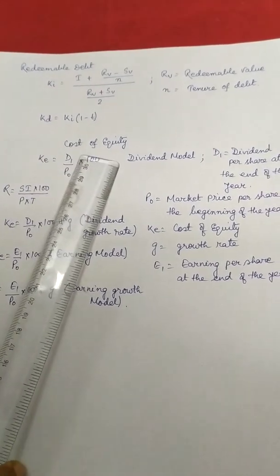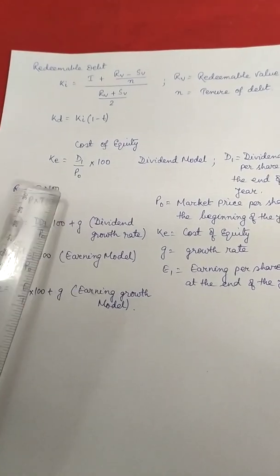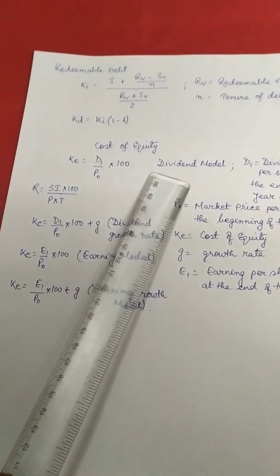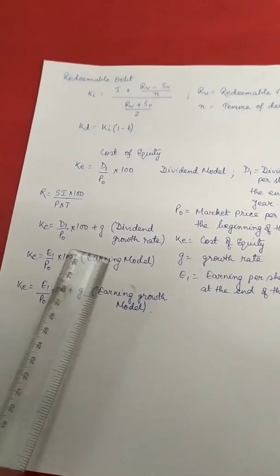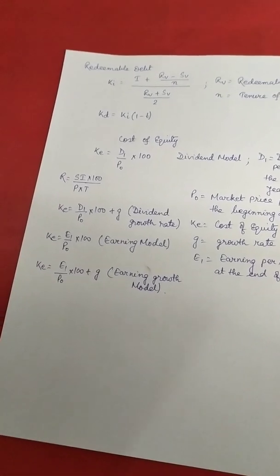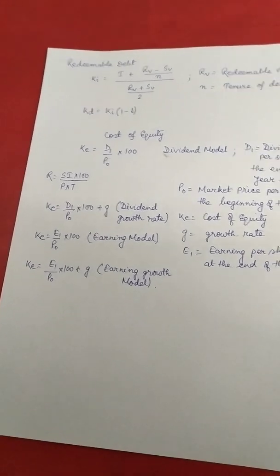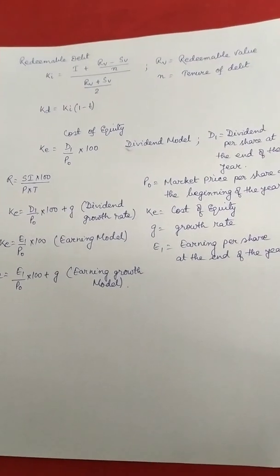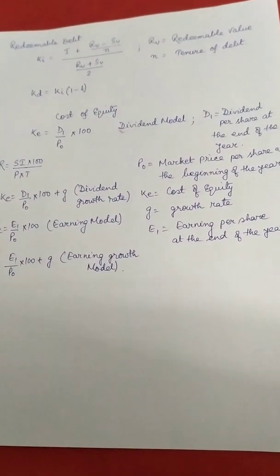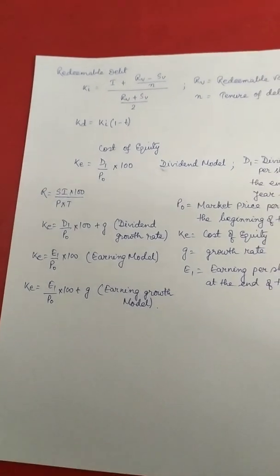Coming to cost of equity — there are different ways to compute it: the dividend model, dividend growth model, earnings model, and earnings growth model. Which model is used depends on the nature of the investor — whether long term or short term. If the investor is a long-term investor, the earnings model is used; if short-term, the dividend model is used.